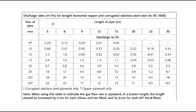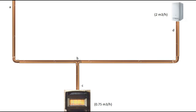Going to our table, we haven't got a seven-meter column, so we go to the next one up, which in this case is nine meters. We needed it to pass 0.75 meters cubed per hour, and the nearest value above that is 0.85 meters cubed per hour. We go back across the chart and it tells us our pipe size — in this case, for the pipe running from B to C, it needs to be 12 millimeters.